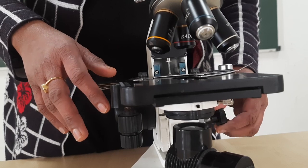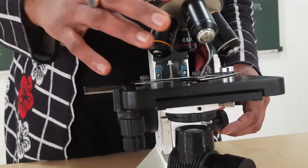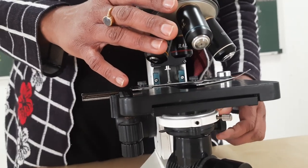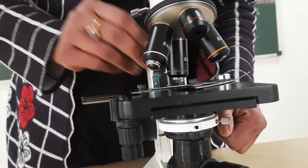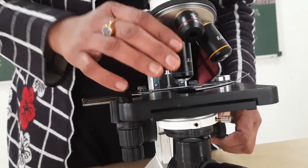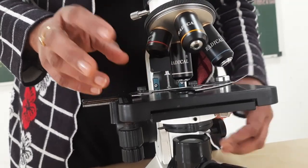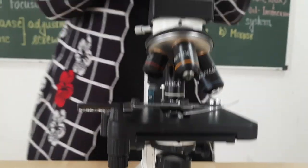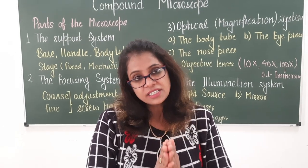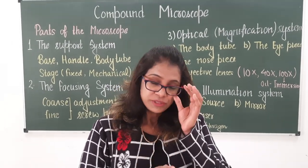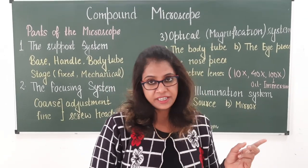When using the 100x objective, the condenser should be in the highest position. This is done to match the numerical aperture — the position of the condenser must be changed according to the objective in use. The concept of numerical aperture will be explained later.